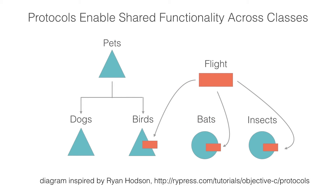Let's talk about another similarity between iOS development in Swift and Objective-C: design patterns. Whether you're writing in Swift or Objective-C, you'll be using principles like the delegate and model-view-controller patterns to guide the architecture of your app. In conjunction with the delegate pattern, both Objective-C and Swift make extensive use of protocols. Part of the need for protocols stems from both languages having single inheritance — a given class can only inherit from one other class. Instead of multiple inheritance, both languages employ protocols to share functionality across unrelated classes.